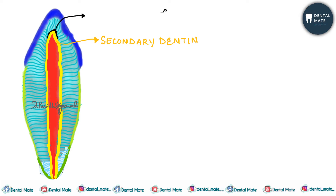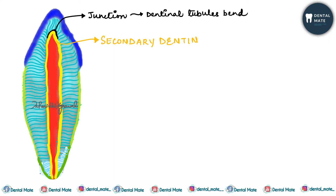Secondary dentinogenesis is slower than primary dentinogenesis, but it maintains an incremental aspect of growth. At the junction between primary and secondary dentine, the dentinal tubules curve or bend a bit.